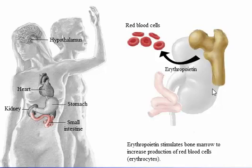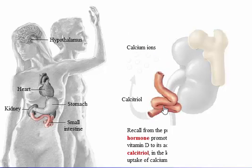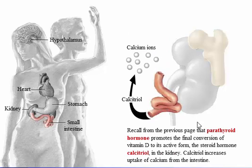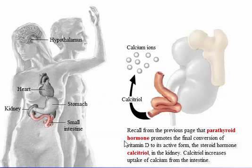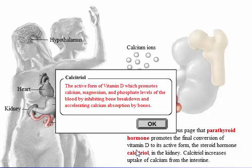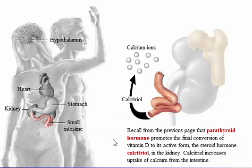Erythropoietin stimulates bone marrow to increase production of red blood cells, or erythrocytes. Parathyroid hormone promotes the final conversion of vitamin D to its active form, the steroid hormone calcitriol, in the kidney. Calcitriol increases uptake of calcium from the intestine.